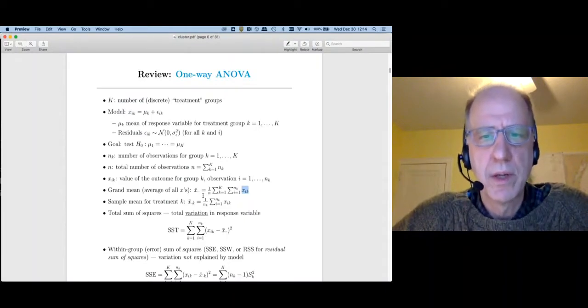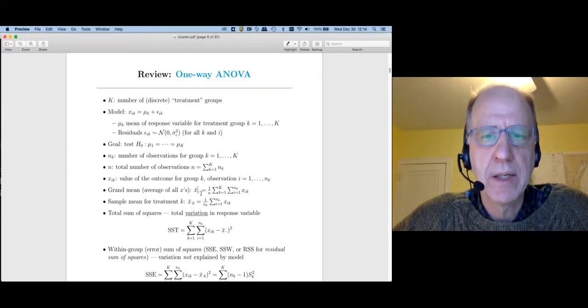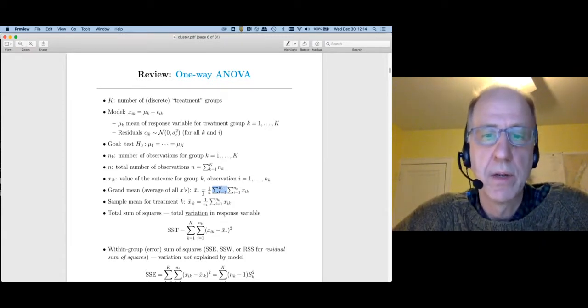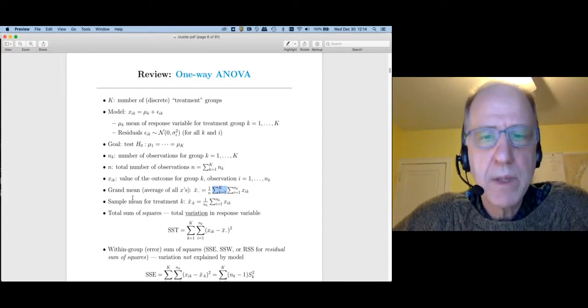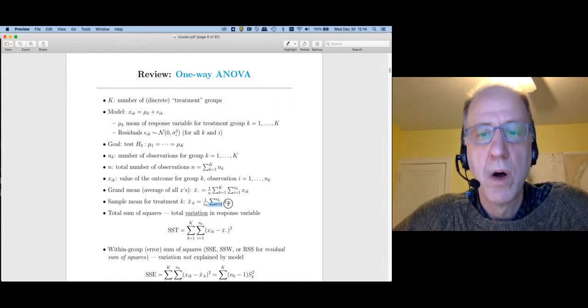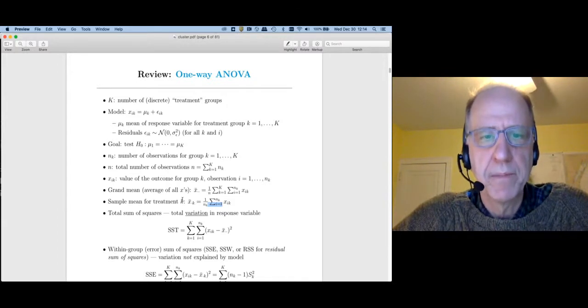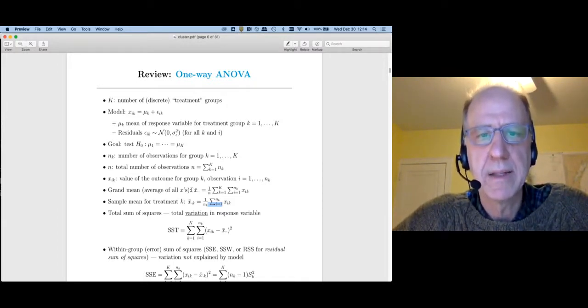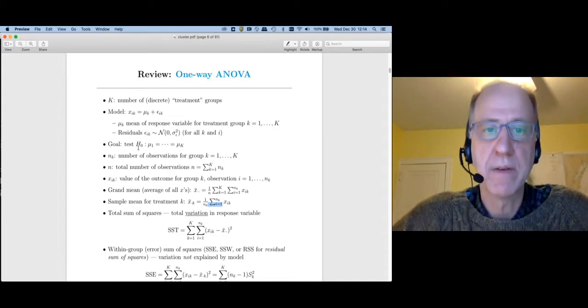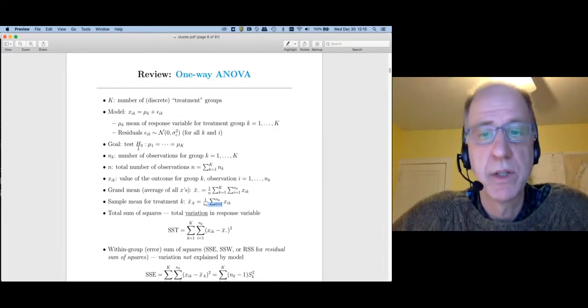So we often use what's called the dot notation. We put a dot in place of a subscript that we average over. So x-bar dot dot means go average over all subjects, that's the first dot, and all groups, that's the second dot. Often we'll just forget the dots and call this x-bar, versus the sample mean for treatment group k, we're going to call x-bar dot k. So the dot part is we're going to average over all the observations within the group, but we're not going to average over groups. So you can think about the grand mean is the model you'd get under the null hypothesis, whereas allowing separate sample means is what you'd get under the alternative hypothesis, that at least one of these means is different.